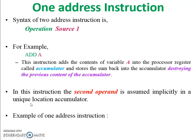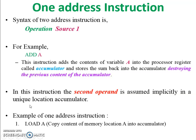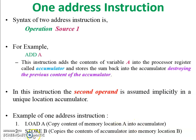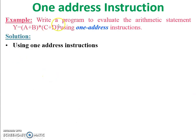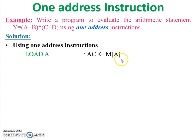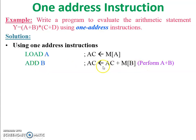In this instruction, the second operand is assumed implicitly in a unique location — the accumulator. Examples of one address instructions: LOAD A copies the content of memory location A into the accumulator; STORE B copies the content of the accumulator into memory location B. Using the same example, write the program using one address instruction: LOAD A — data of A is loaded into the accumulator. ADD B — performs A plus B.